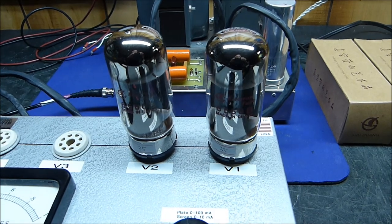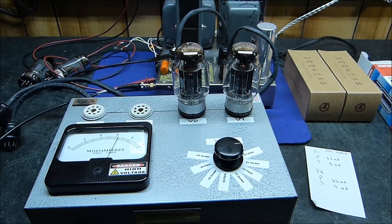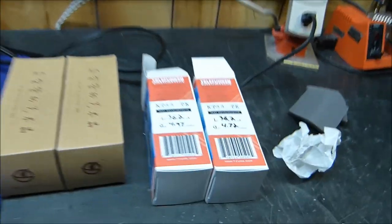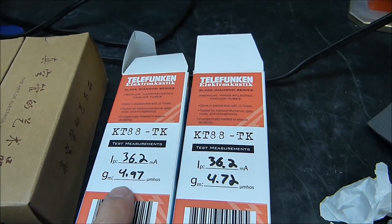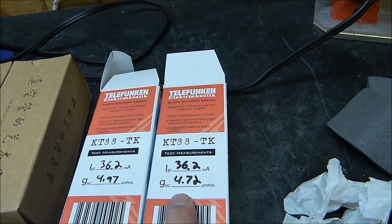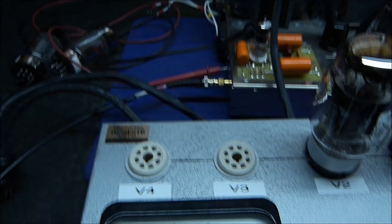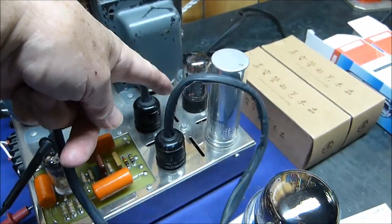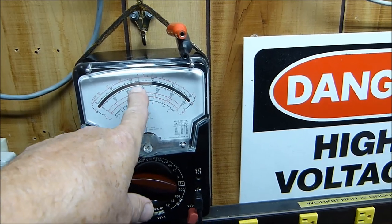Next up are the Telefunkens, these guys right here. They give you the plate current and the gain of each tube. By the way, I'm adjusting the bias in each case here to exactly 1.4 volts, which is 70 milliamps - 140 milliamps is what Dynaco wants you to have.